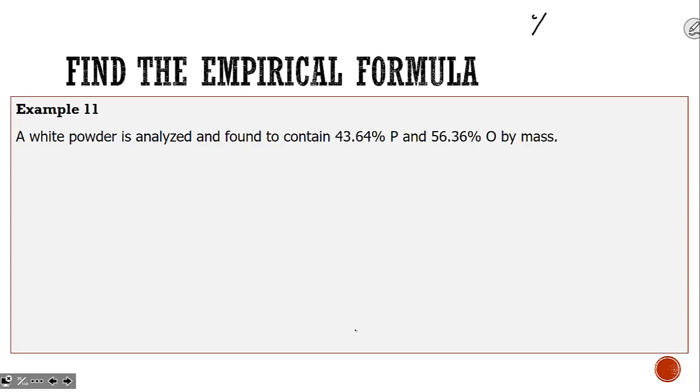The first part of our poem is percent to mass. If you're given an empirical formula's percent composition, we assume you have a 100 gram sample. This is the easiest step. Simply change the percent signs to grams. 43% phosphorus becomes 43 grams of phosphorus, and 56% oxygen becomes 56 grams of oxygen.